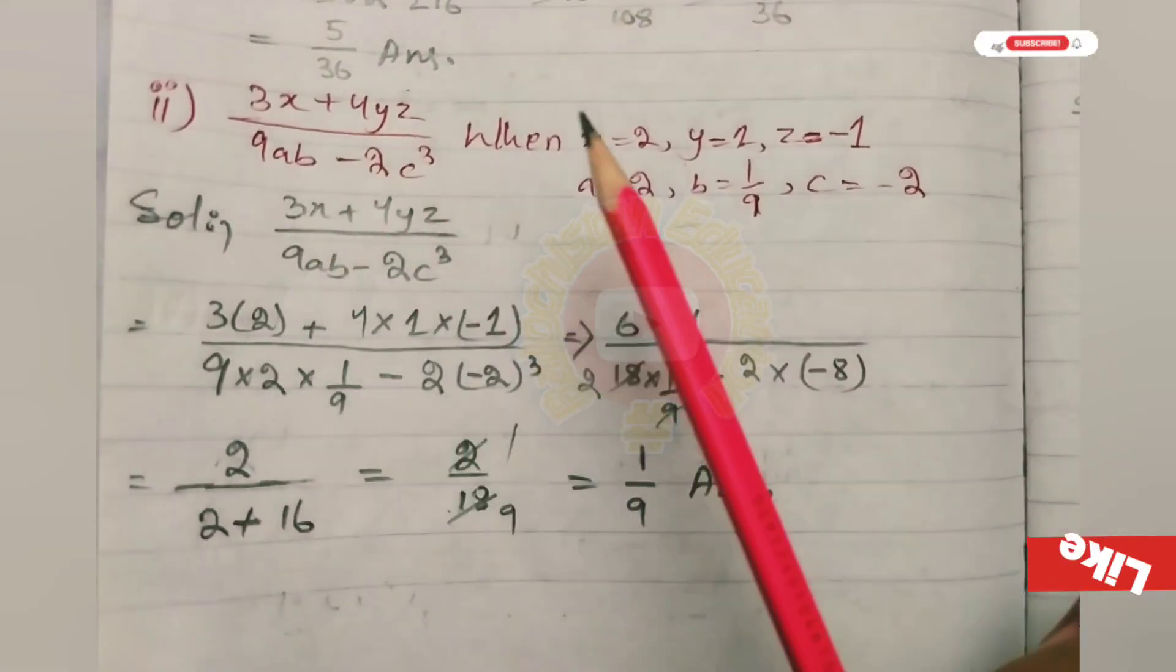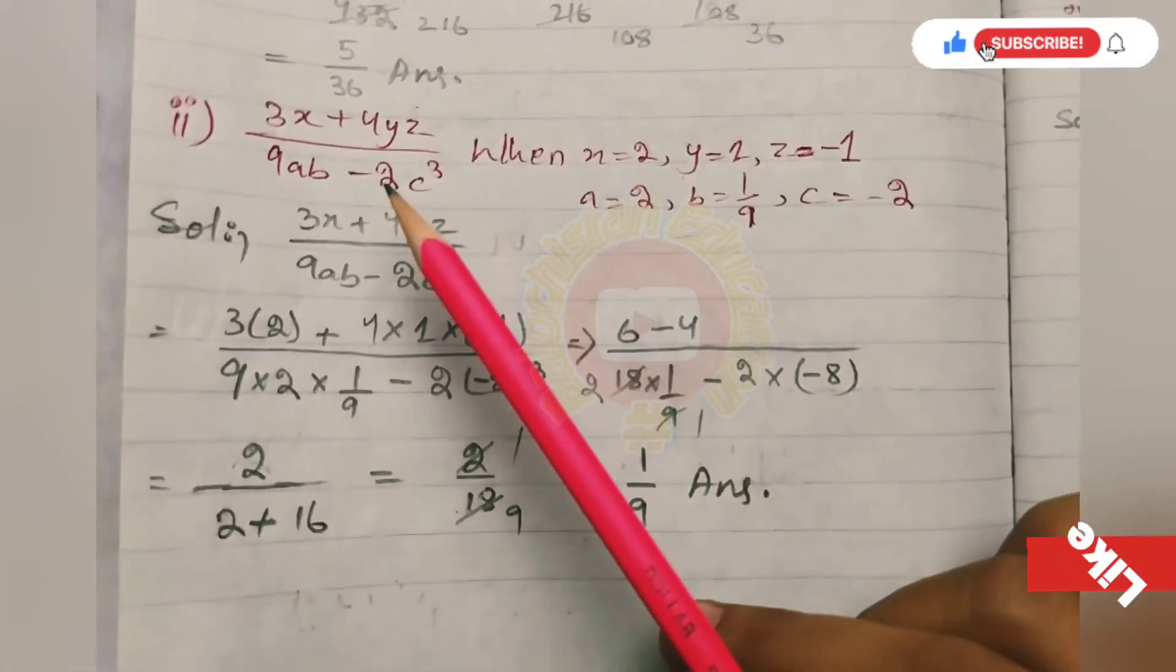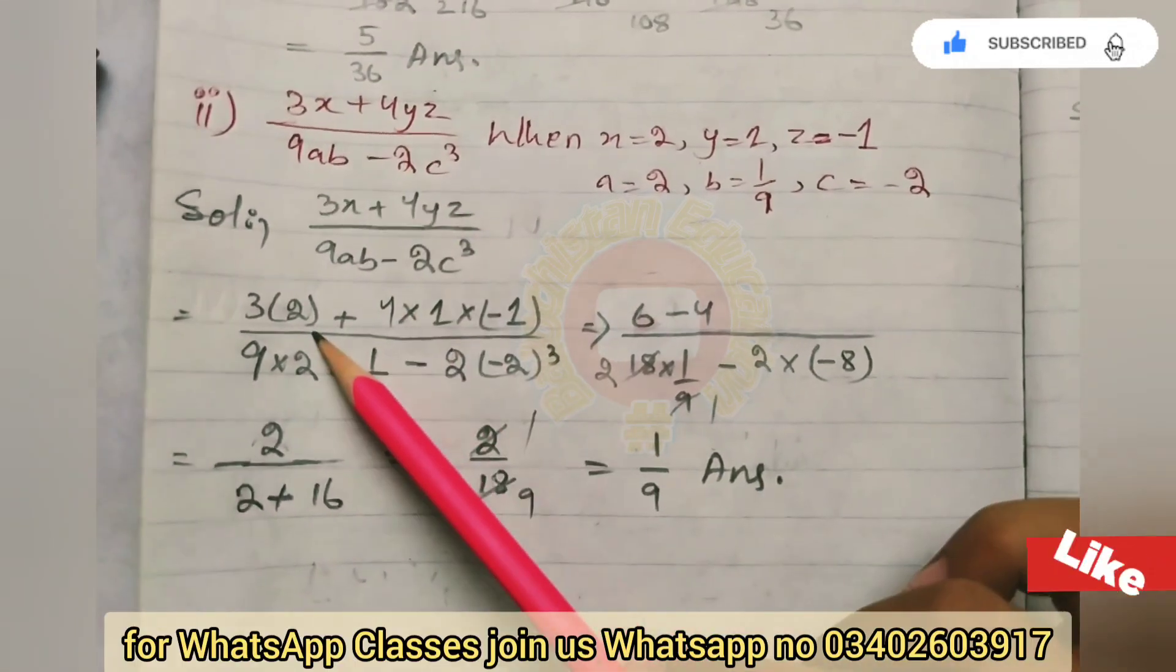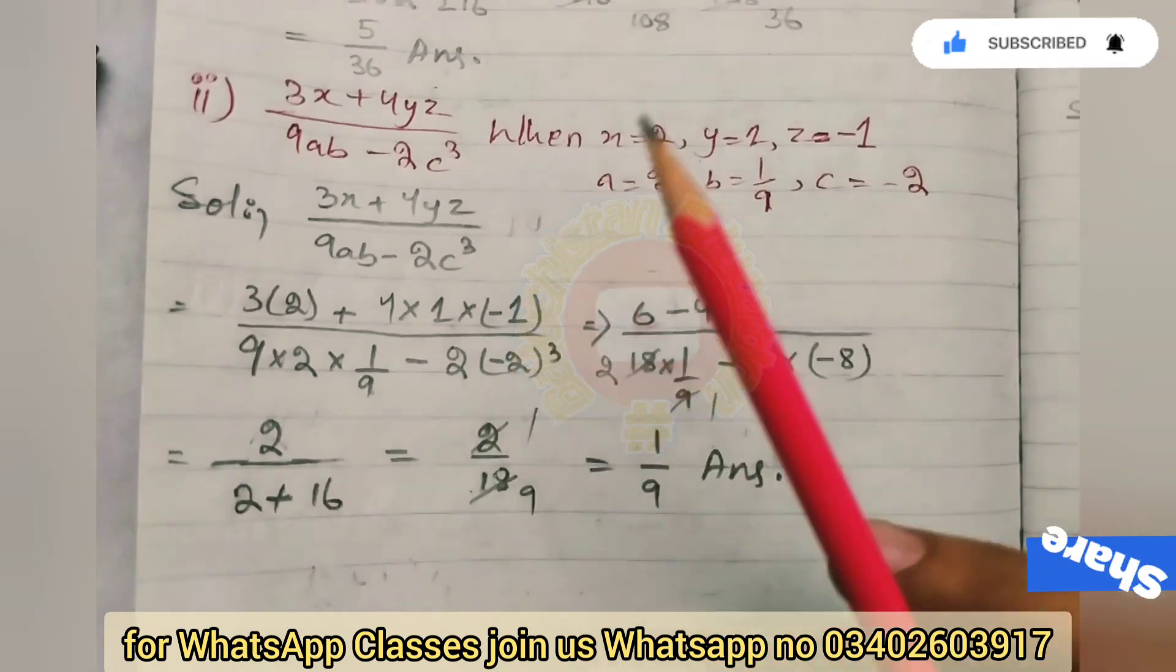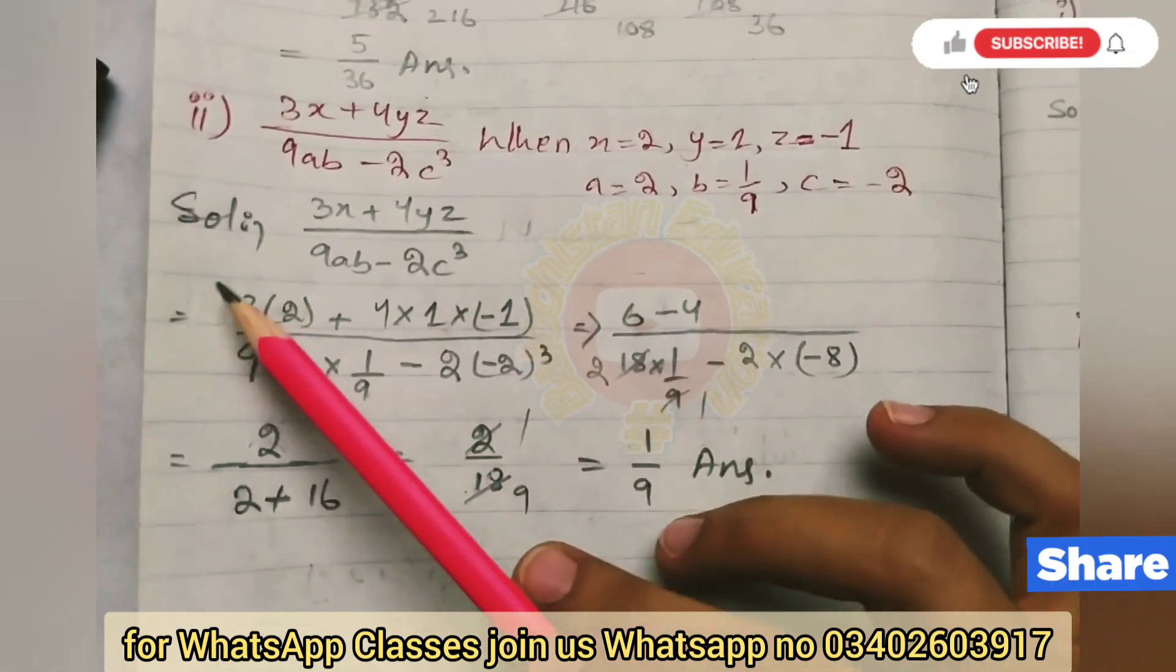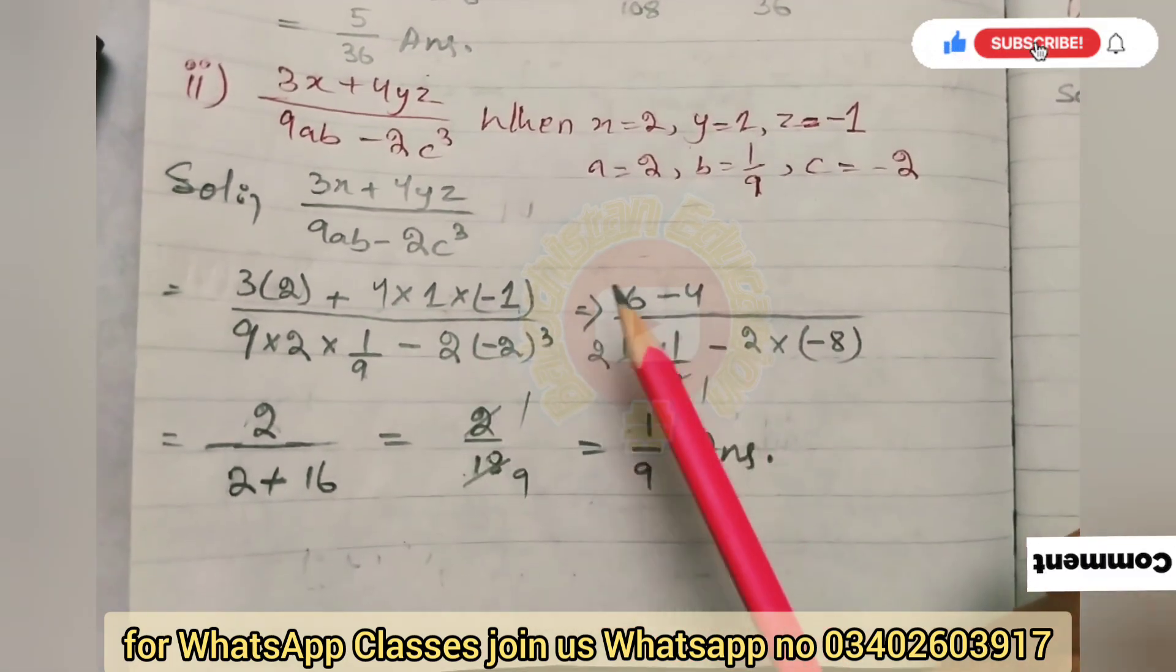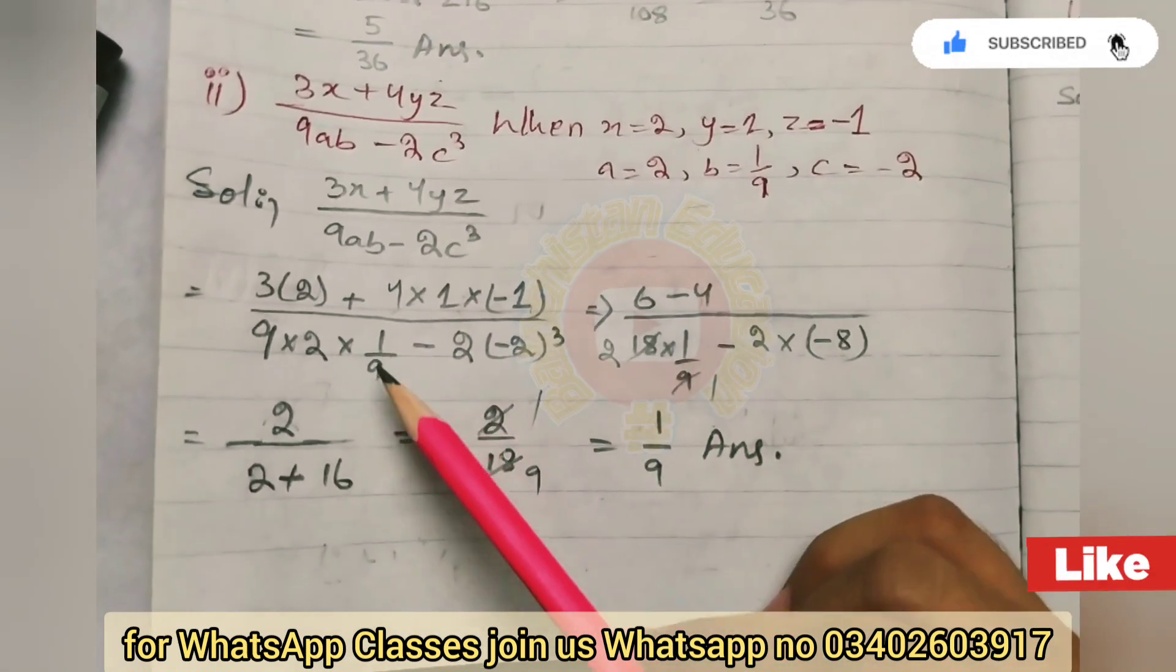Here we can see x, y, z and a, b, c. First, we have to put values in our question. Where we have x, y and z values, and where we have a, b, c values. Put after: 3 times 2 is 6, 4 times 1 is 4. 4 multiplied by minus 1 equals minus 4, so 6 minus 4. Here we have 9 times 2 is 18, 1 upon 9.